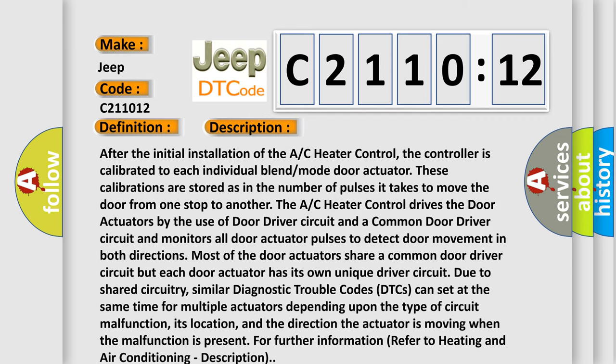After the initial installation of the AC heater control, the controller is calibrated to each individual blend mode door actuator. These calibrations are stored as the number of pulses it takes to move the door from one stop to another.